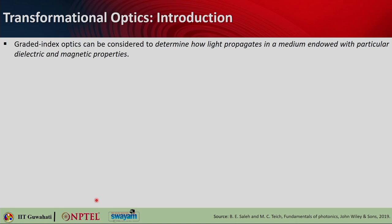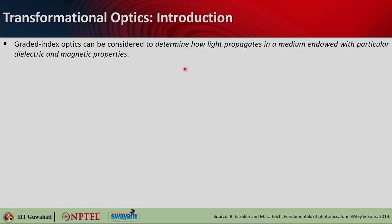Let us introduce transformation optics. The first thing that should come to your mind is that this comes from some sort of coordinate transformation. The requirement for transformation optics comes from the fact that you want to bend light in a particular way depending on your will. You may argue that graded index optics allows you to do the same thing — yes, graded index optics determines how light can propagate in a medium with particular dielectric and magnetic properties. When you take it further, you will be able to make light do anything.